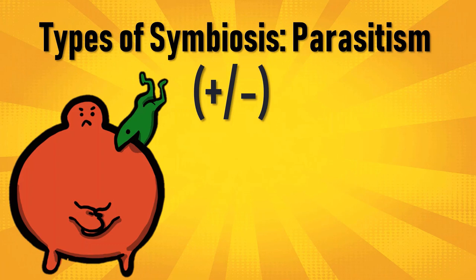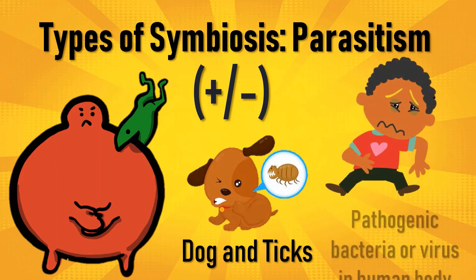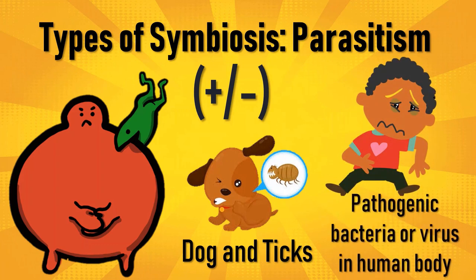A good example is the dog and ticks. In biological systems, parasites mainly live on or inside the host body and rely on the host for food and energy requirements, thus exhausting the host's resources. The bacteria and viruses that attack us and make us sick are parasites who are benefiting at the cost of our health, so we are at a loss.